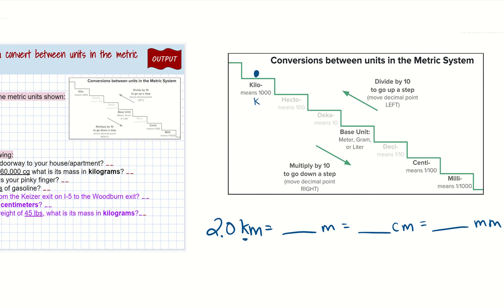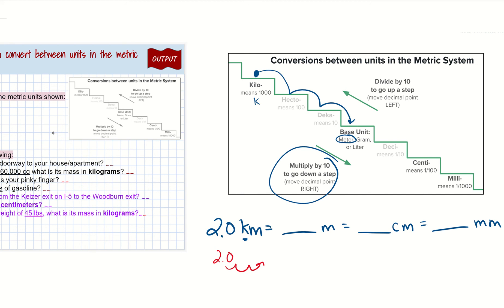The first thing I want to convert to is meters, which is the base unit with no prefix. Going from kilo to the base unit is one, two, three steps down. When you go down, you multiply by 10 for each step. So I move my decimal place to the right three times — I need filler zeros since 2.0 times 10 is 20, times 10 is 200, times 10 is 2,000. That gives us 2,000 meters.